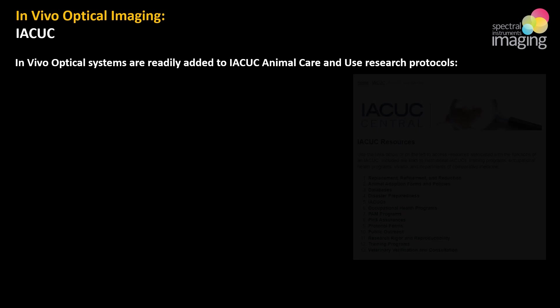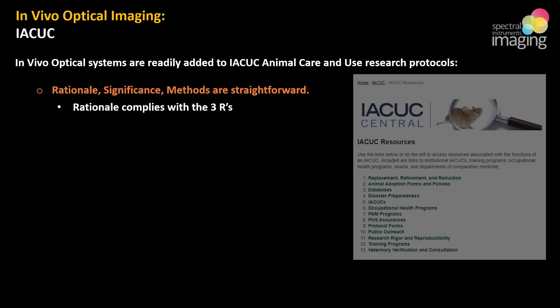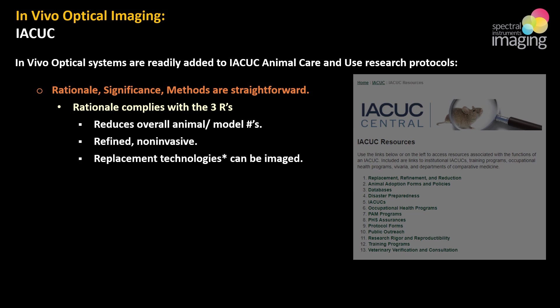Let's chat about what can seem like the 800-pound gorilla in the room: IACUC animal care and use protocols. These systems are actually pretty easily adapted to current or new ACUPs, and SI Imaging can also assist if needed. Rationales comply with the three R's: reduction in overall numbers through reuse; refined, non-invasive method of data collection; and replacement tech can also be imaged — think organs on a chip, organoids, or in vitro assays — which ties in nicely with the recently passed FDA Modernization Act 2.0, which promotes the acceleration of alternatives to animal testing in non-clinical research.